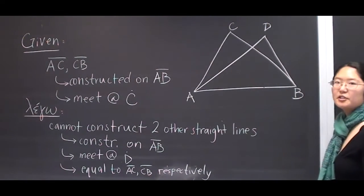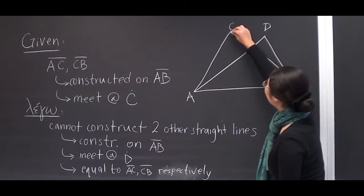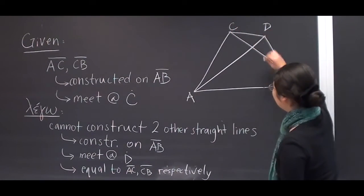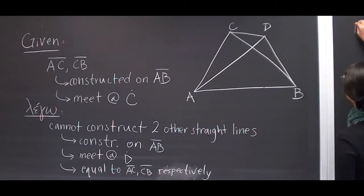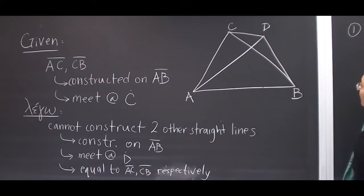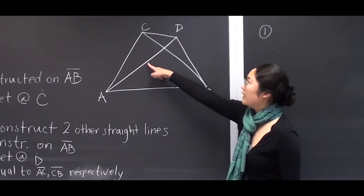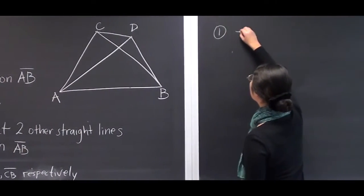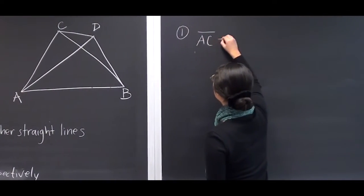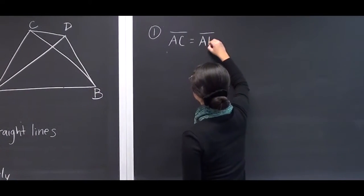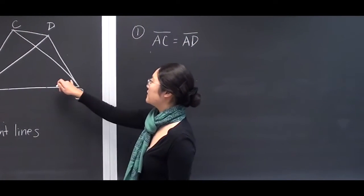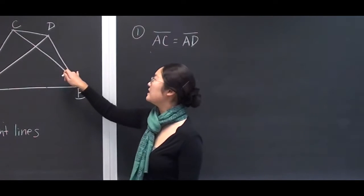And let us connect the two points CD. Therefore, AC will equal the line AD and line CB will equal the line DB.